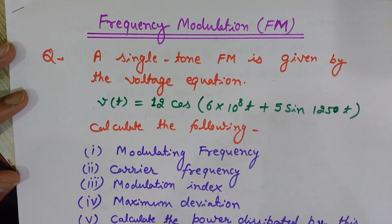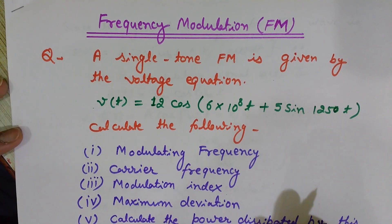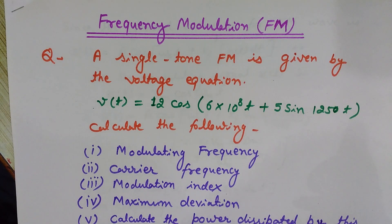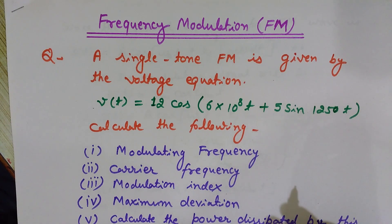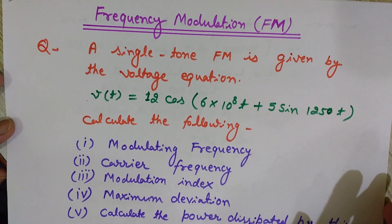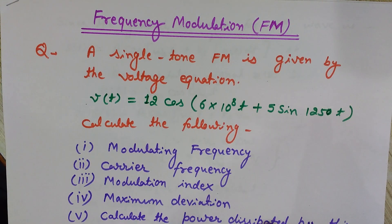So this was all about this video. We learned and calculated various things: modulating frequency, carrier frequency, modulation index, maximum deviation, and power dissipated in a resistor in FM. We also learned the general equation of the frequency modulated wave and what frequency modulation means. I think you must have liked the video. If you liked it, please share and like it, and if you have not subscribed to my channel, please subscribe. Thank you for watching. Have a nice day.